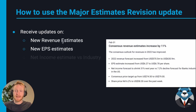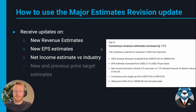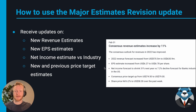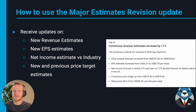The data covered in this update includes the new revenue estimates — what analysts now expect revenue to be — compared to what they expected before. It also shows the new EPS estimates versus previous estimates, and the new net income estimate versus the industry. This tells us how much the net income is expected to grow for this particular business versus the industry it's in, giving us context as to whether this stock is above average or below average compared to peers.